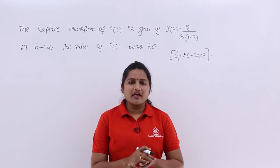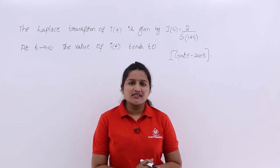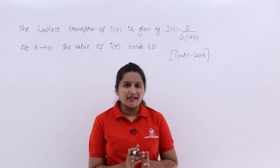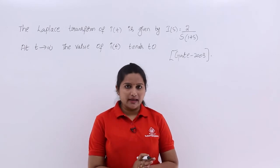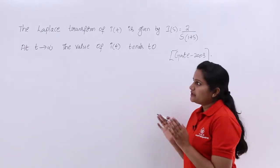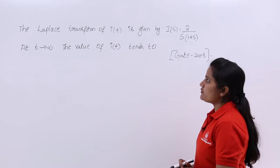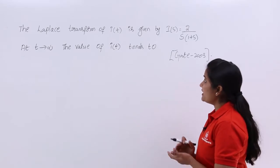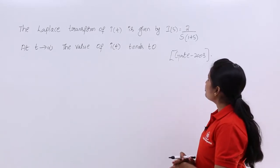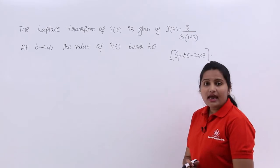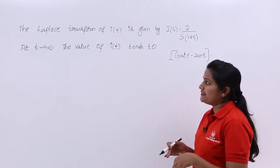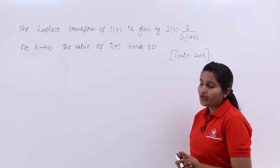In this video, we are going to discuss a previous GATE problem related to the final value theorem in Laplace transforms. The Laplace transform of I(t) is given as I(s) = 2 / [s(1 + s)]. At t tending to infinity, the value of I(t) tends to what?